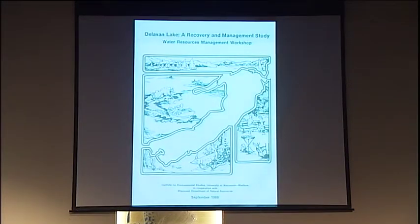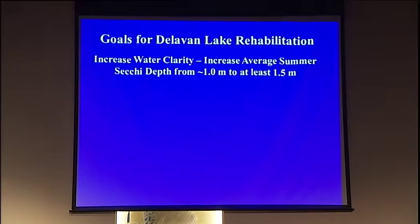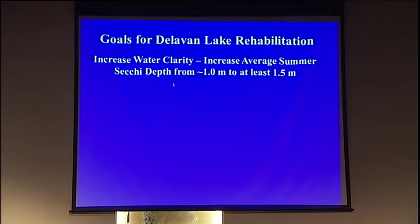So we had all this information, and now we came up with a management plan — very similar to what's done for lakes around here. We wanted to find ways to reduce all that phosphorus loading to improve the water quality. We worked with the University of Wisconsin, and students went through there trying to come up with a way to fix everything. The first goal was to improve water clarity from one meter to a meter and a half.